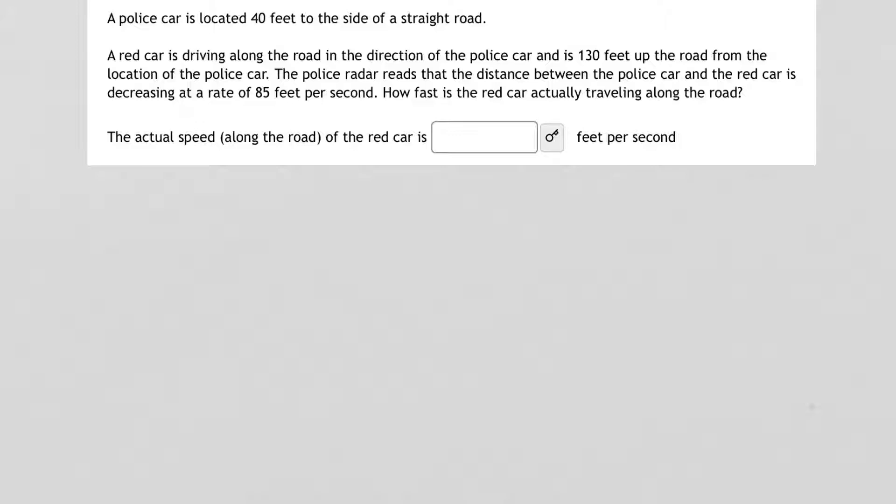The first step I would take in solving this related rate problem is to get a picture or diagram of what's going on. So at first we have a police car and this police car is sitting 40 feet to the side of a straight road. So let me draw a little police car here. I apologize ahead for my drawing, but here we've got a police car and it is sitting 40 feet off the side of a road. Now that's constant, that 40 feet is not changing, so I'm going to label it 40 feet off the side of a road.